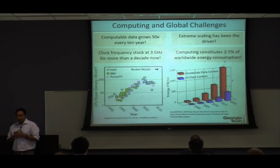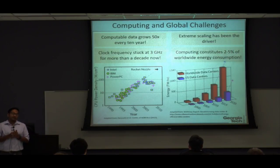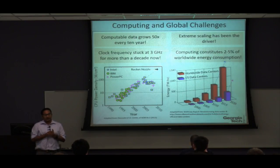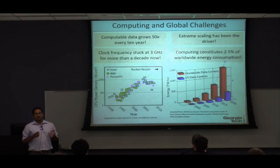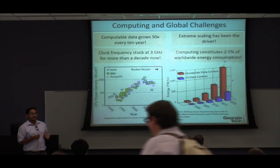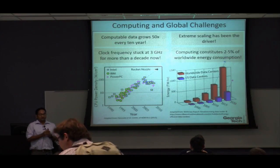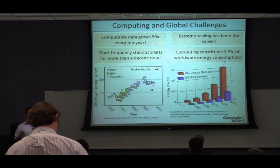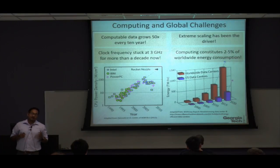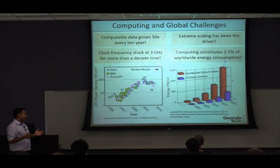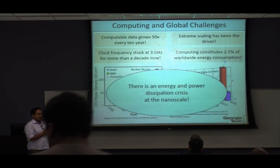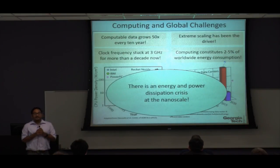Our appetite for electronic technology also has macroscopic ramifications. Data centers and servers constitute 2 to 3 percent of worldwide energy consumption. Another way to put it: the carbon footprint of data centers and servers is equivalent to mid-sized countries like Malaysia and the Netherlands. There is an energy and power dissipation crisis happening at the nanoscale.